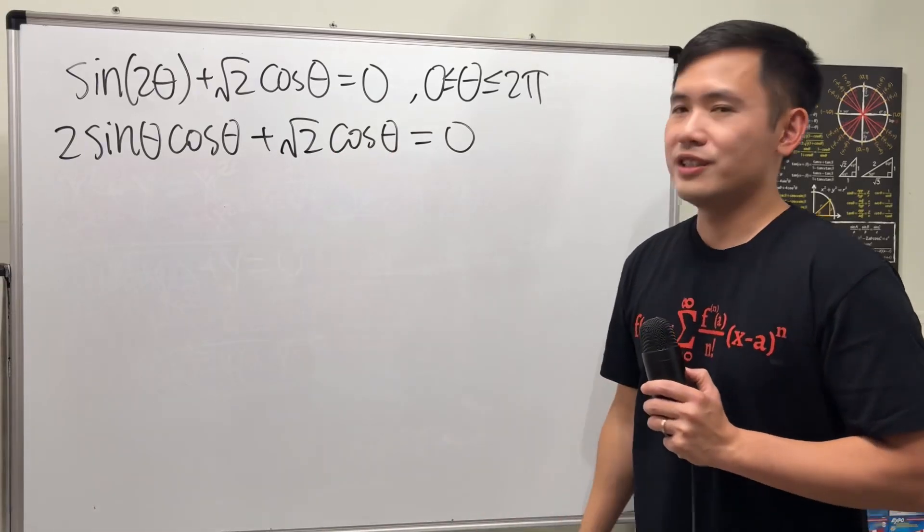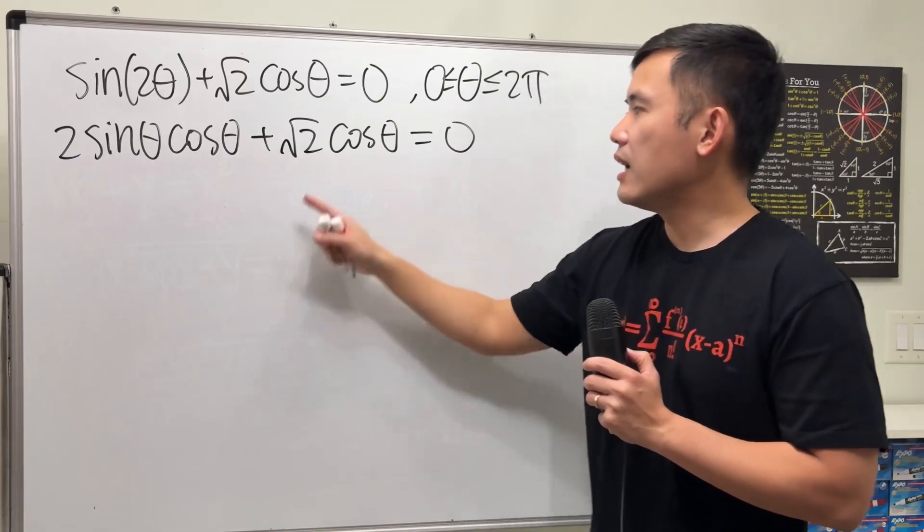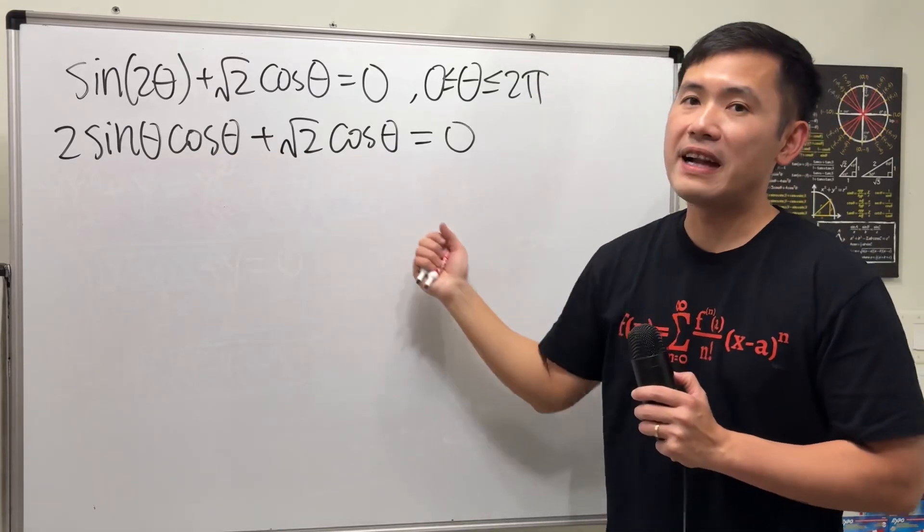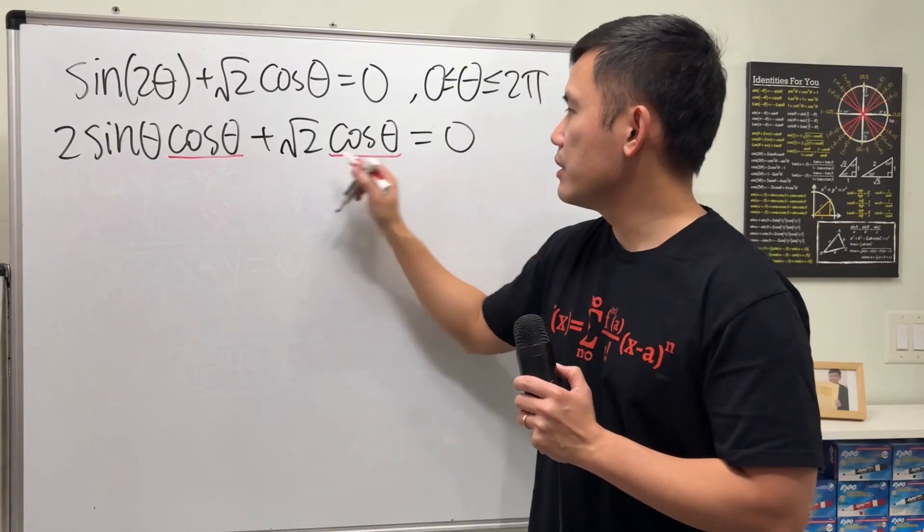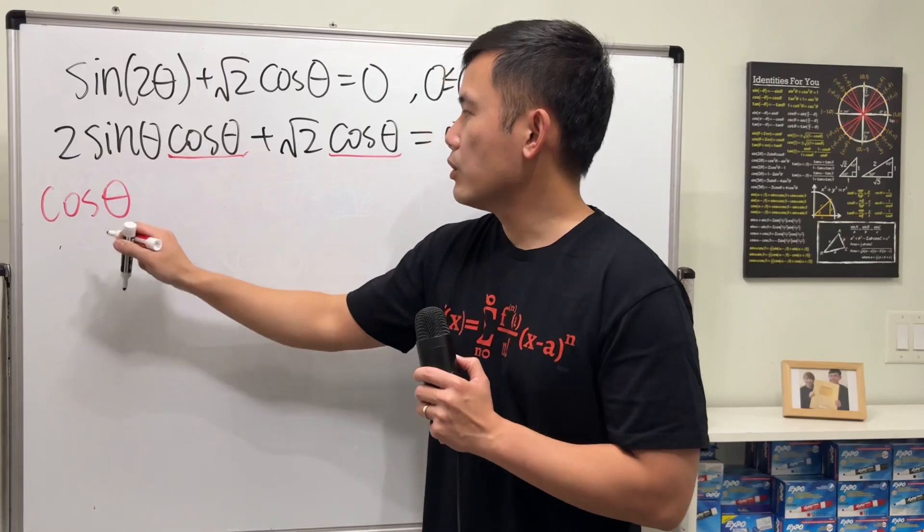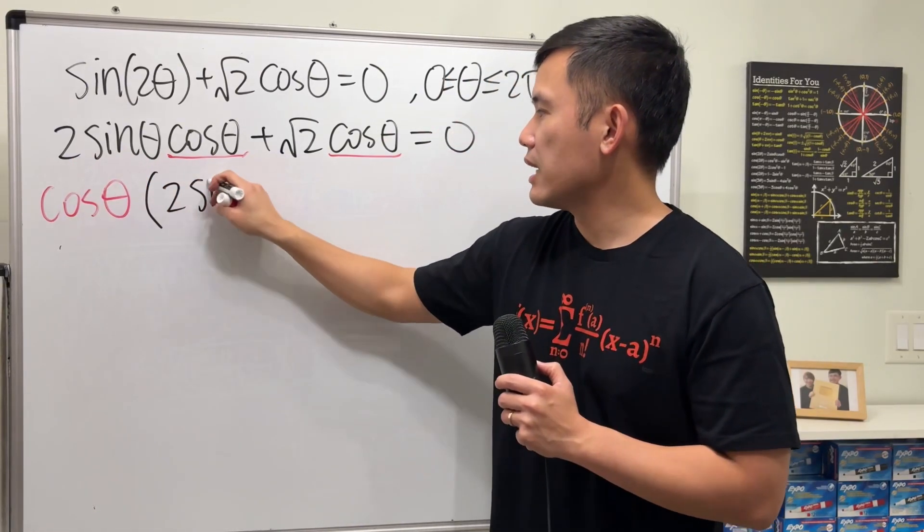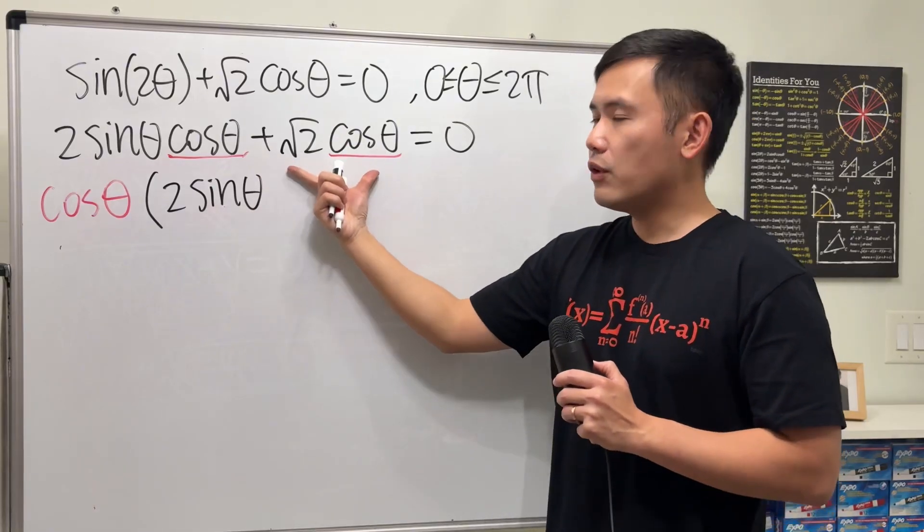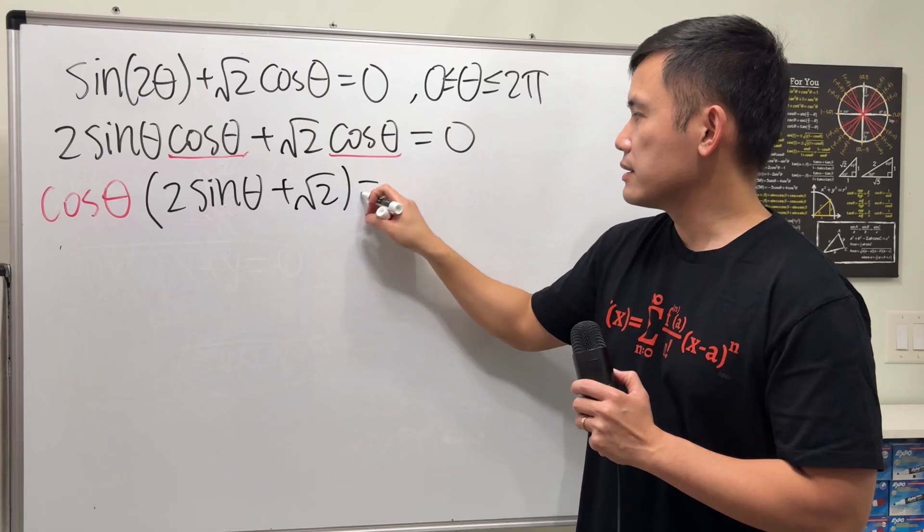Now what do we notice? This term has cosine theta likewise this, so we can factor it to the outside. Factor out the cosine theta here and here and put that down here. Cosine theta times the leftover is the 2 sine theta and the leftover from here is the plus square root of 2 and that's equal to 0.